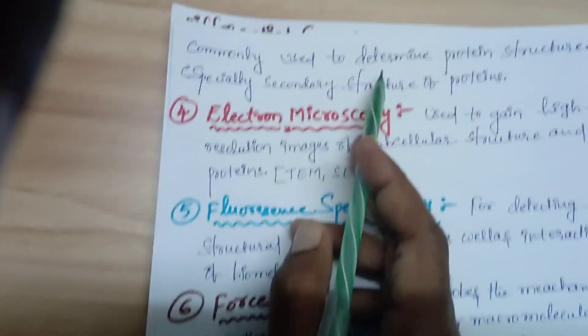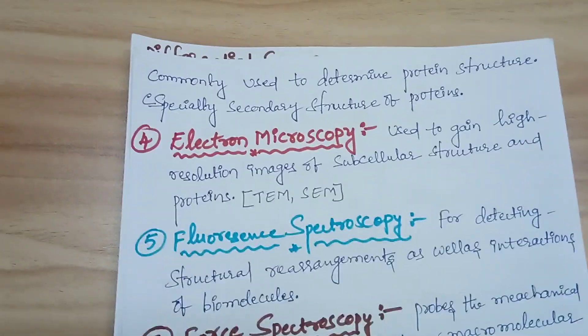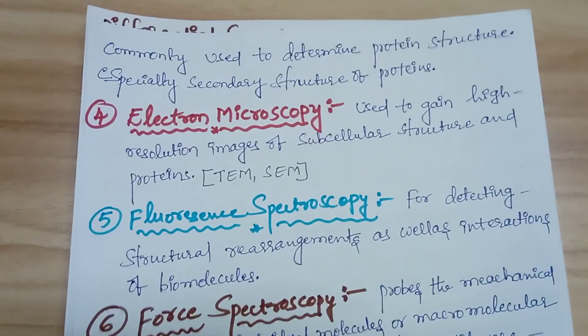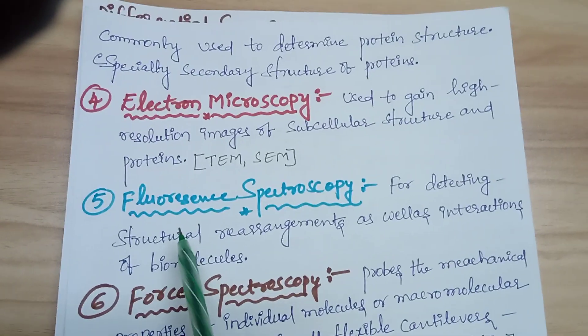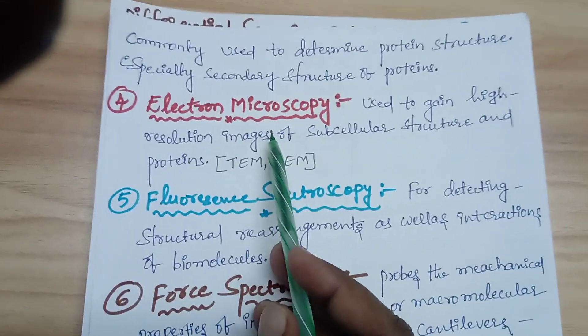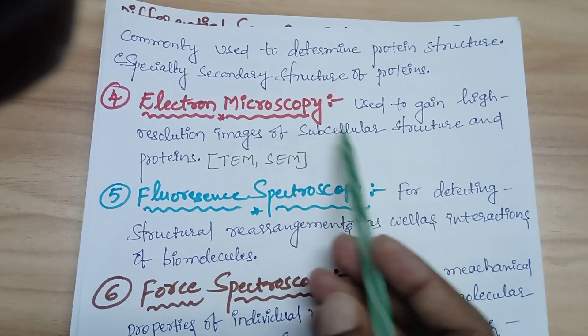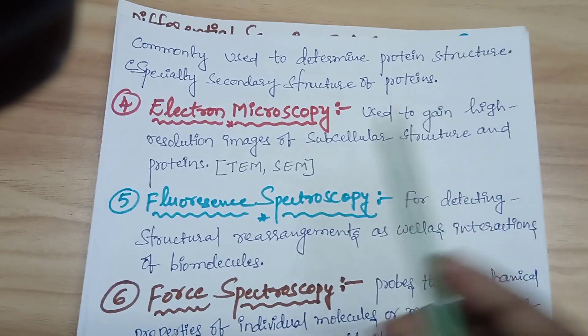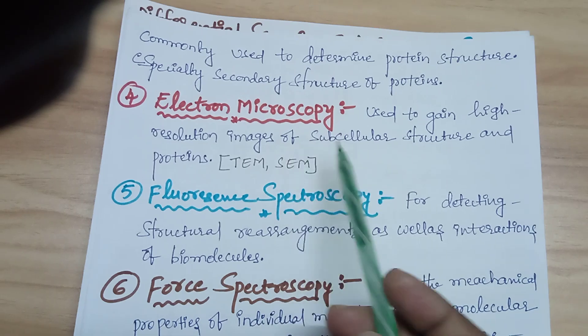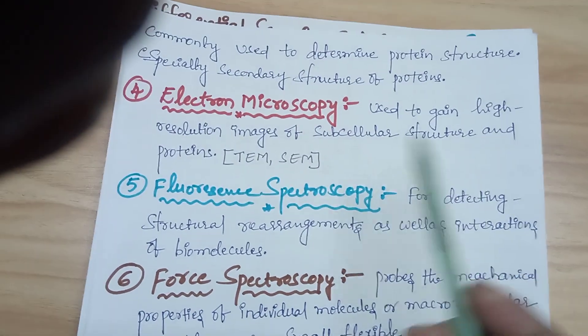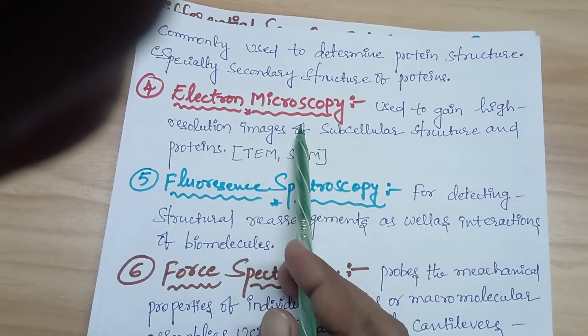Circular Dichroism is commonly used for determining protein structure, and especially the secondary structure of proteins. The fourth technique is electron microscopy, used for gaining high-resolution images of subcellular structures and proteins.